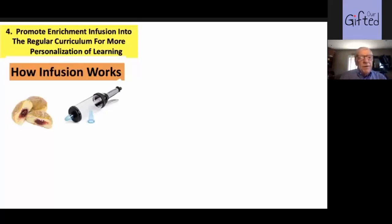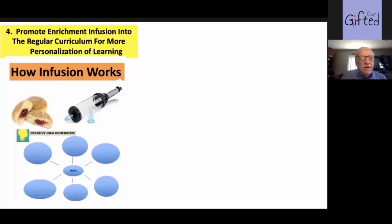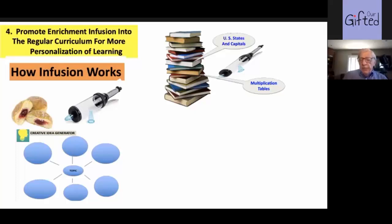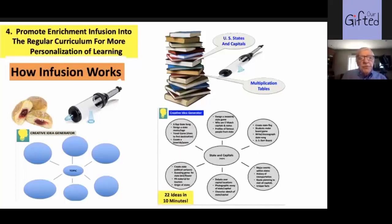I use this metaphor — how do bakers get the jelly in the jelly donut? — which is my metaphor for infusion. What we've developed is a thing called the creative idea generator. These are examples from schools I've actually worked with. I asked a group of middle-grade teachers, what were the two most memory-oriented things that they teach? The highest on the list were US states and capitals and multiplication tables. Then they were divided into groups and asked to think of ways they could make those two topics more interesting. In 10 minutes they came up with 22 different ideas.